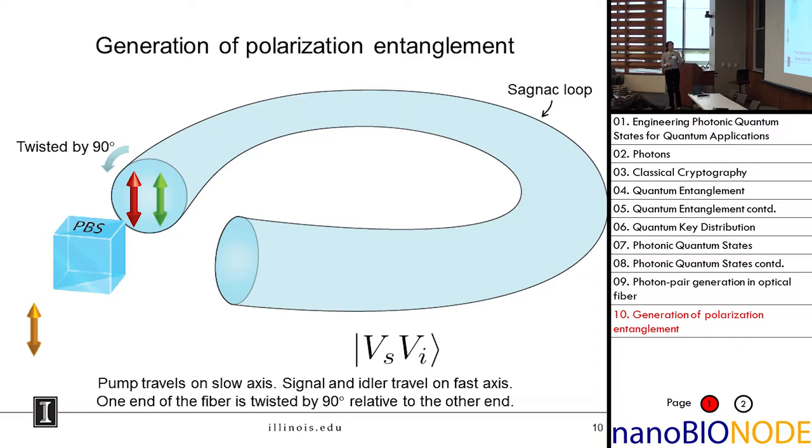The way this works is when we send in our pump photons, there's a polarizing beam splitter that reflects vertically polarized photons and transmits horizontally polarized photons. The vertically polarized photons are launched into the slow axis of the optical fiber. They will generate photon pairs on the orthogonal axis. The vertically polarized pump generates horizontally polarized photon pairs. But we've twisted the fiber by 90 degrees so that by the time they exit the fiber, they're actually both vertical. That gives us our state VV. We've generated a pair of photons both with vertical polarization.